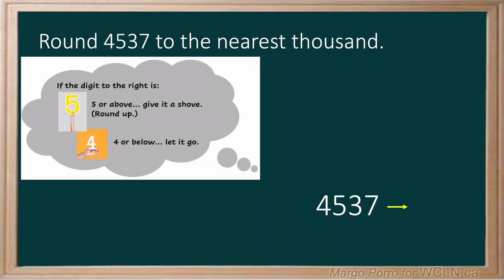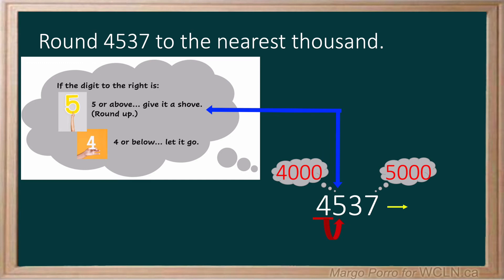Round four thousand five hundred thirty-seven to the nearest thousand. Four thousand five hundred thirty-seven is between four thousand and five thousand. Let's underline the thousands place and look at the digit to the right. Is the digit to the right weak or strong? There are five hundreds — five is strong. The strong number makes the thousands change; it gives the four a shove up to five. We round up to five thousand and the digits after the thousands change to zeros.